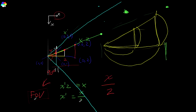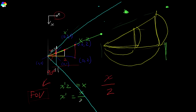Field of view is a common graphics setting familiar to anyone who plays 3D games — it controls how wide a field gets projected onto your screen. To increase the field of view, we could make the projection screen larger, or keep the screen the same size and move it closer to the focal point. Both approaches intuitively yield a larger field of view. By controlling these parameters, you can control the field of view.